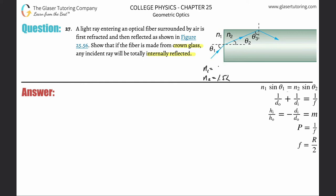The refracted ray at the first boundary becomes the new incident ray at the second boundary. We need to show that any incoming ray will be totally internally reflected — meaning the refracted ray at the second boundary must reach 90 degrees. To do this, we first find the critical angle θ3 using the critical angle formula: sine inverse of (refracted medium / incident medium), where n2 is always the refracted medium and n1 the incident medium.